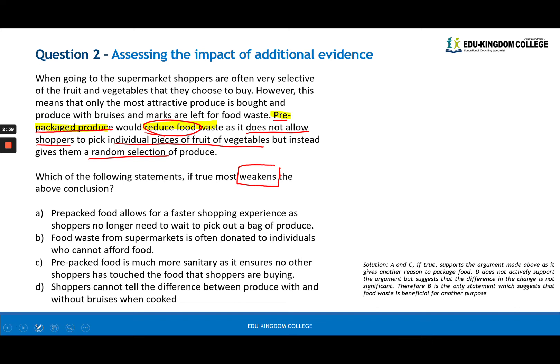And the answer here is actually B. Food waste from supermarkets is often donated to individuals who cannot afford food. Why this is the best answer is we talk directly about this food waste from supermarkets. We're talking about food waste from supermarkets. When people are selective and they buy fruit and veg and they leave behind the bruised and unattractive ones that get thrown away. Now, if these were often donated to individuals, i.e. not wasted, then the statement here that prepackaged produce is the only thing that reduces food waste is false, is weakened. It suggests another purpose for food waste that is beneficial. Therefore, B is the answer.